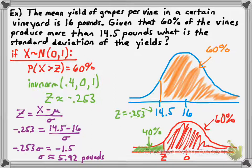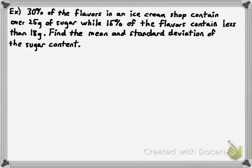We're going to increase the difficulty level here for the next example, but the concept is generally the same. Ice cream this time. 30% of the flavors in an ice cream shop contain over 25 grams of sugar — let's say that's per scoop — while 15% of the flavors contain less than 18 grams per scoop.